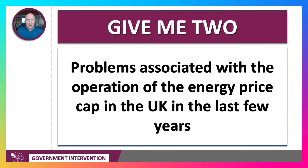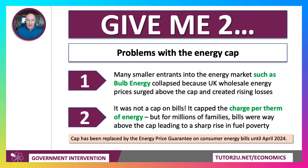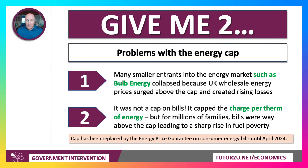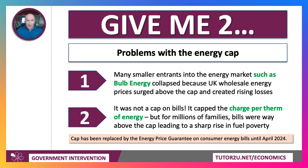Two problems with the operation of the energy price cap in recent years: holding down the price created difficulties. First, many smaller entrants into the energy market — a good example being Bulb Energy — collapsed because the wholesale price of energy rose well above the cap, creating rising losses that these companies simply didn't have the financial resources to cope with. Second, critically, there wasn't a cap on bills — it capped the charge per therm of energy but not the total bill. So large households with significant energy needs, such as families with care needs requiring high temperatures, faced bills way above the cap, leading to a significant increase in fuel poverty.